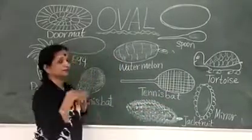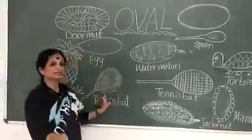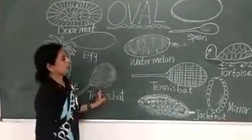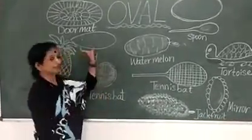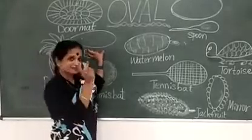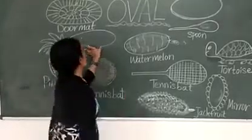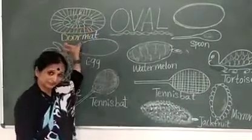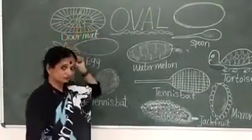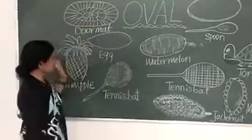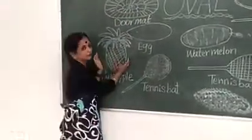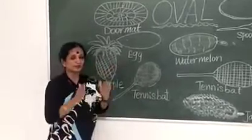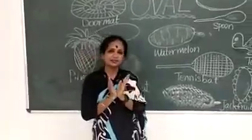And also you can find in a table. And also you can find in an egg. Egg is also in an oval shape. And also you can find oval shape doormat. Here in a doormat also you can find. And also you can find the favorite fruit that is pineapple. Pineapple is also in an oval shape.